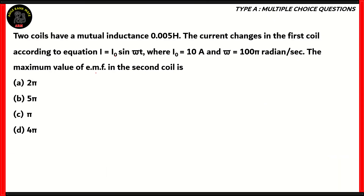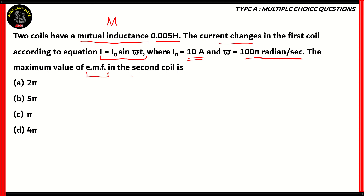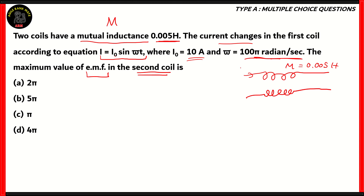Now, let's look at another question. Two coils have a mutual inductance of 0.05 henry — mutual inductance is represented by uppercase M. The current changes in the first coil according to the equation I equals I0 sine omega t, where I0 is 10 amperes and omega is 100 pi radians per second. The maximum value of EMF, electromotive force, in the second coil is?